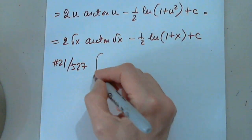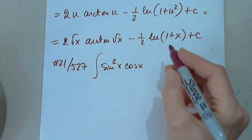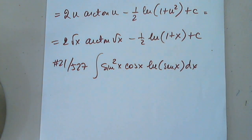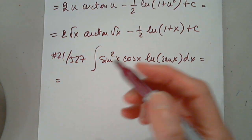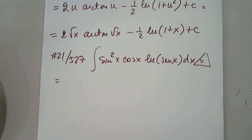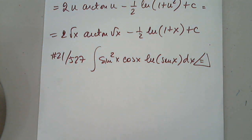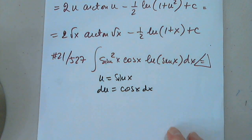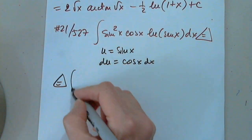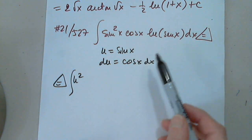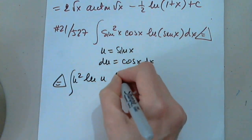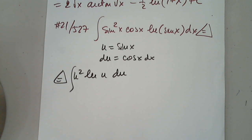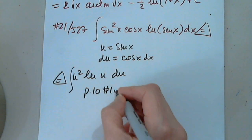Let's look at number 21, also on page 527: the integral of sin²(x) · cos(x) · ln(sin x) dx. It requires a substitution. Let u = sin(x), so du = cos(x) dx. The integral becomes: u² · ln(u) du.